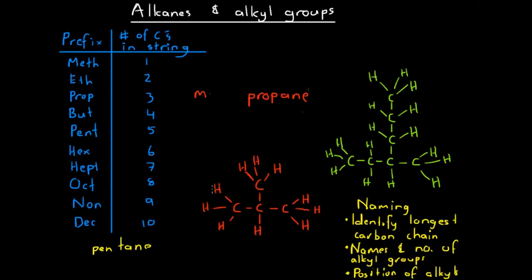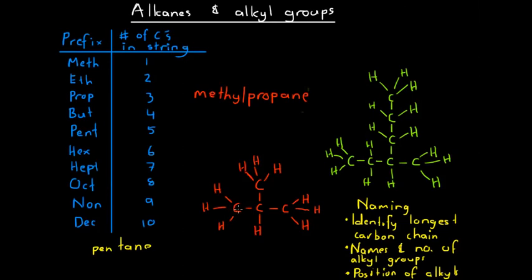We've identified the alkyl group as a methyl group and there's only one of them. We only need to describe the position of alkyl groups when there's ambiguity. Here, we don't need to number because with propane — three carbons — the methyl group can only go on the middle carbon. If it were on an end carbon, we'd have a longer chain of four carbons and it wouldn't be propane. So the molecule is simply methylpropane.